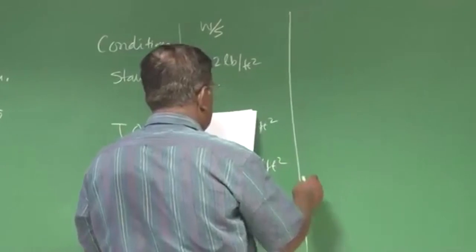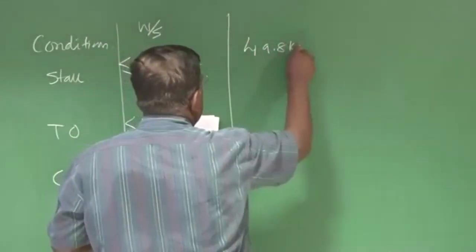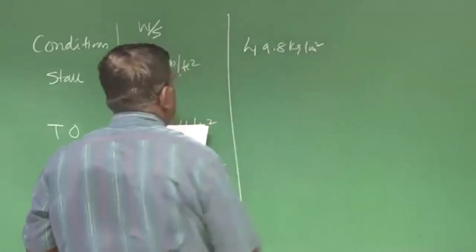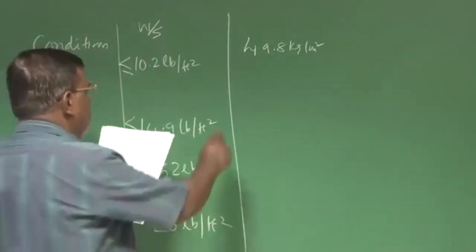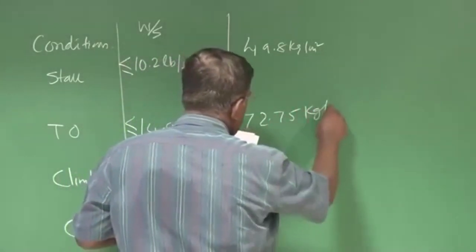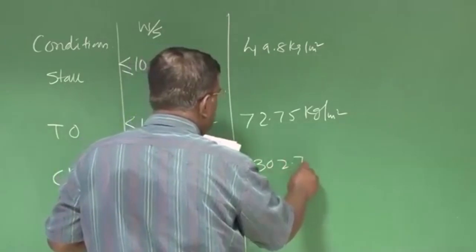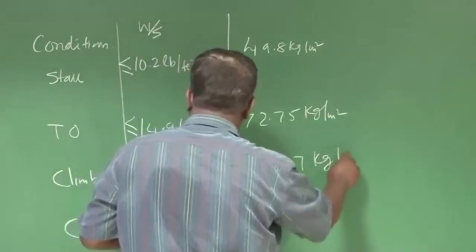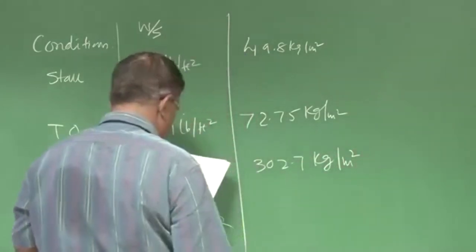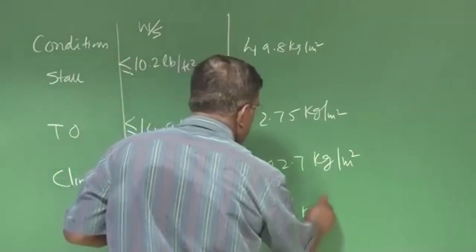I get this around 49.8 kg per meter square, 72.75 kg per meter square, 302.7 kg per meter square, and cruise was around 97.6 kg per meter square. Please see the conversion whether they are correct or not.